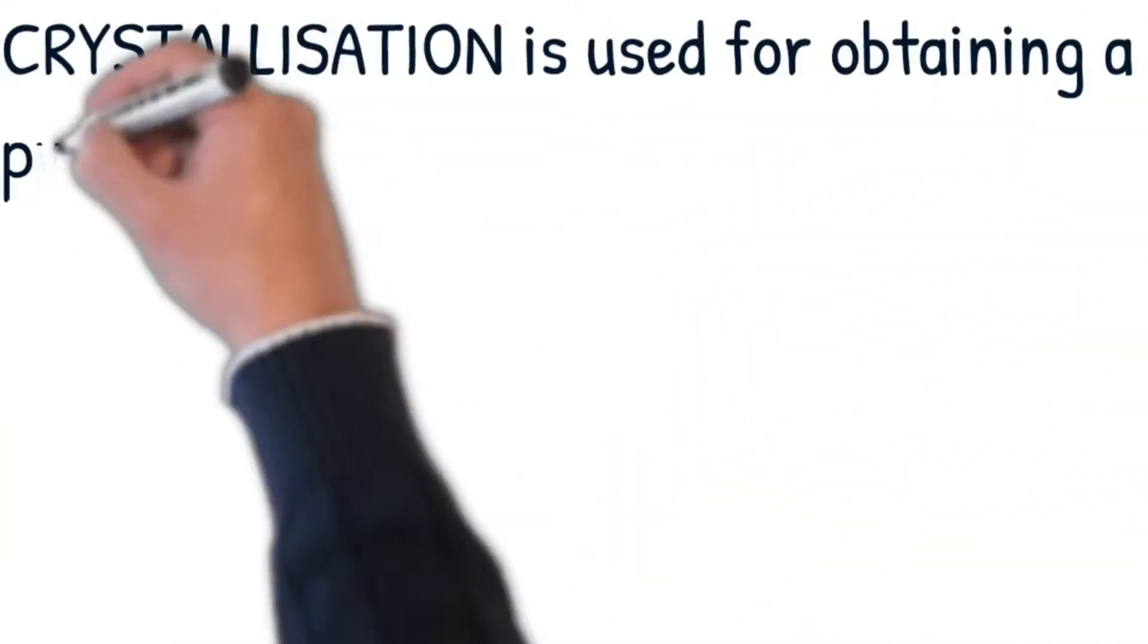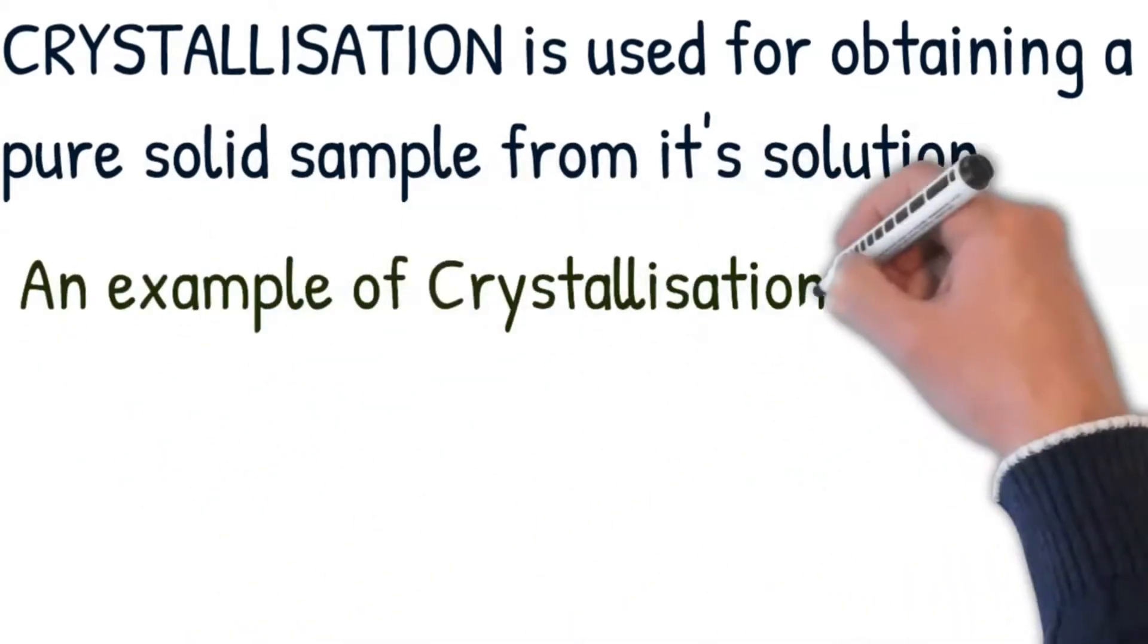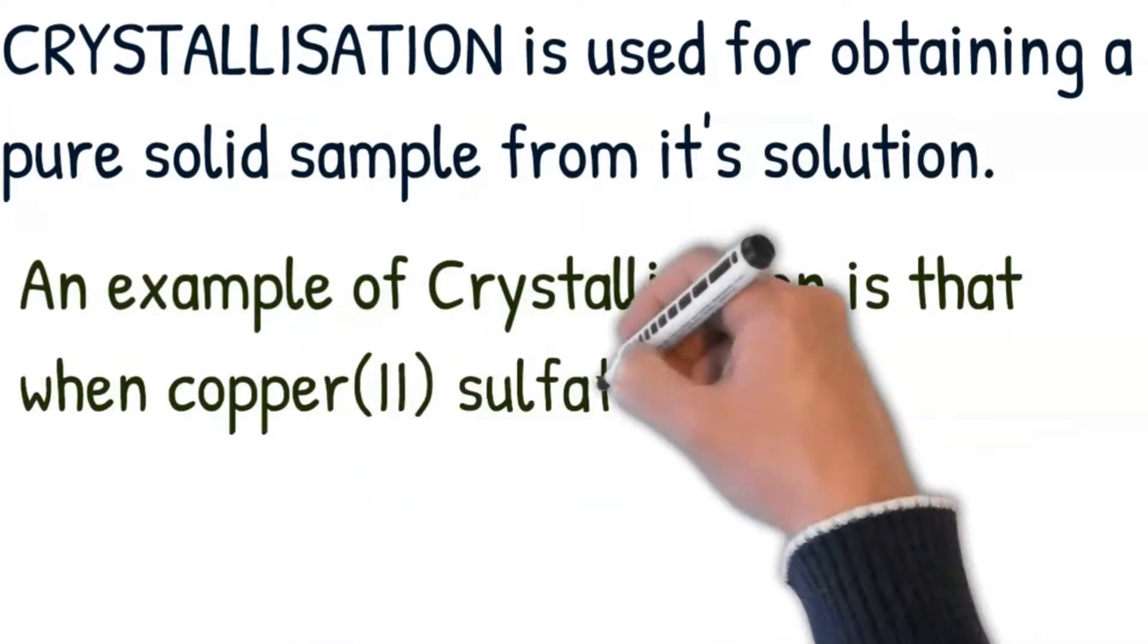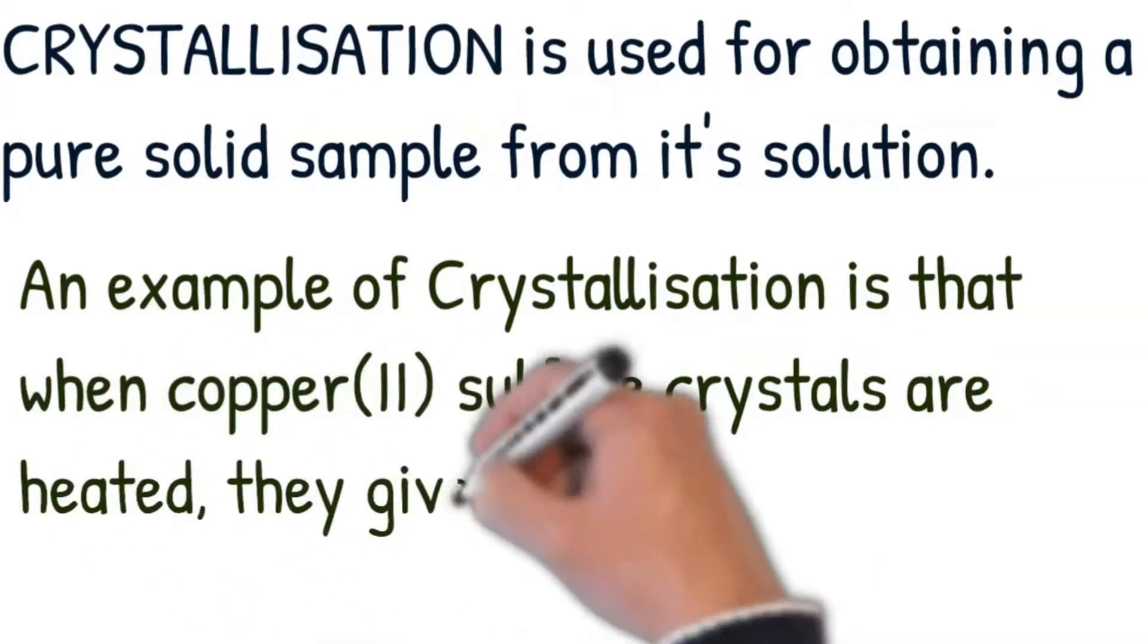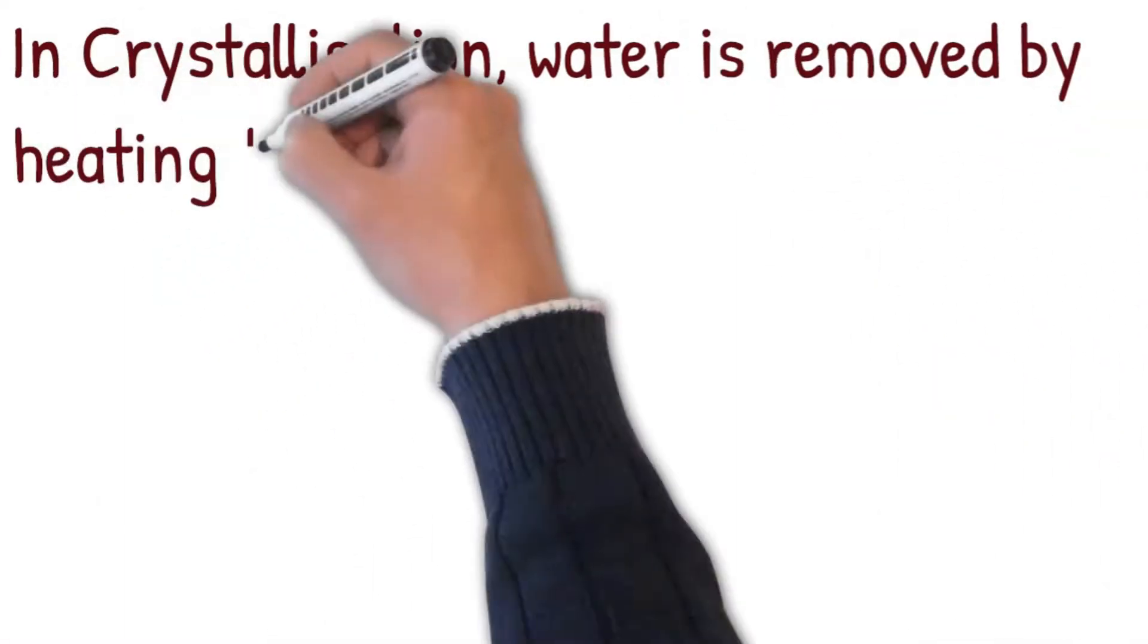Crystallization is used for obtaining a pure solid sample from its solution. An example of crystallization is that when copper sulfate crystals are heated, they give off water and become powders. In crystallization, water is removed by heating the solution.